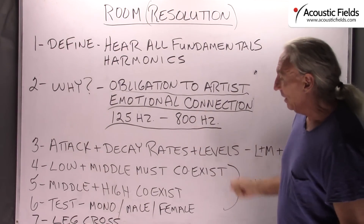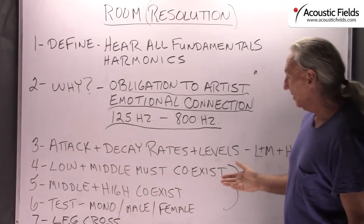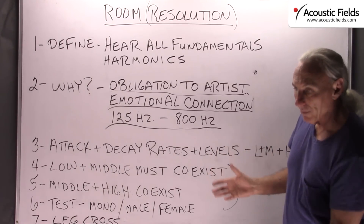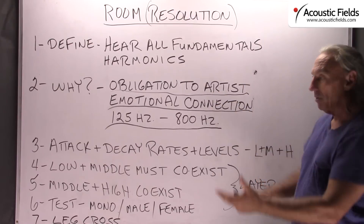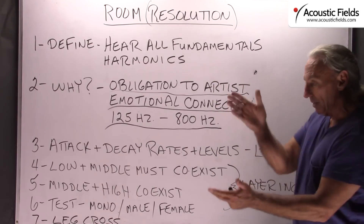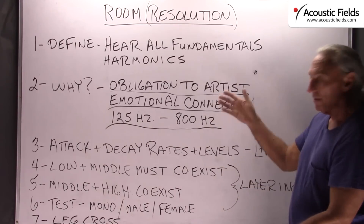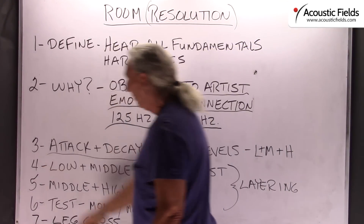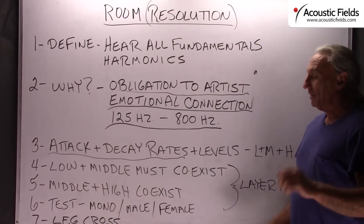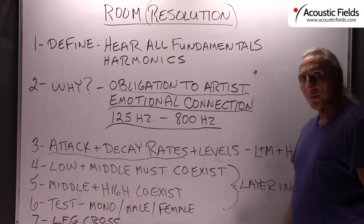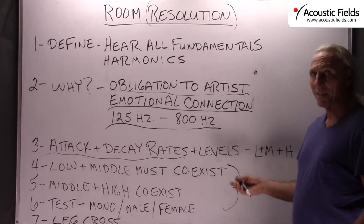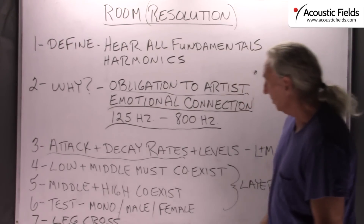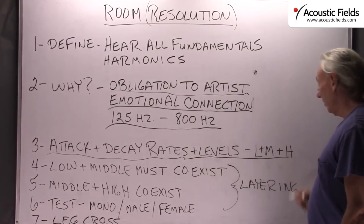How do we get that? First thing we have to do is control the attack and decay rates, which are really critical in your room. That's why I created the carbon technology, because I've never been in a room where the low end and the mids and the highs are all balanced out unless it's a good sized room. So the carbon technology is really critical — it helps you get a nice balance between the lows, mids, and highs.